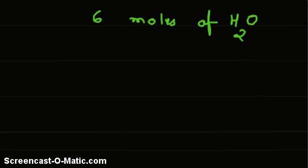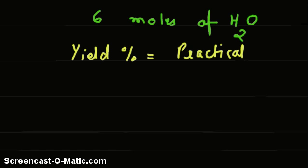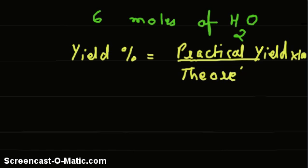Now let us find how much is that practical yield. We have been given yield percentage, and the formula which we are going to use is: yield percentage equals practical yield into 100 divided by theoretical yield.